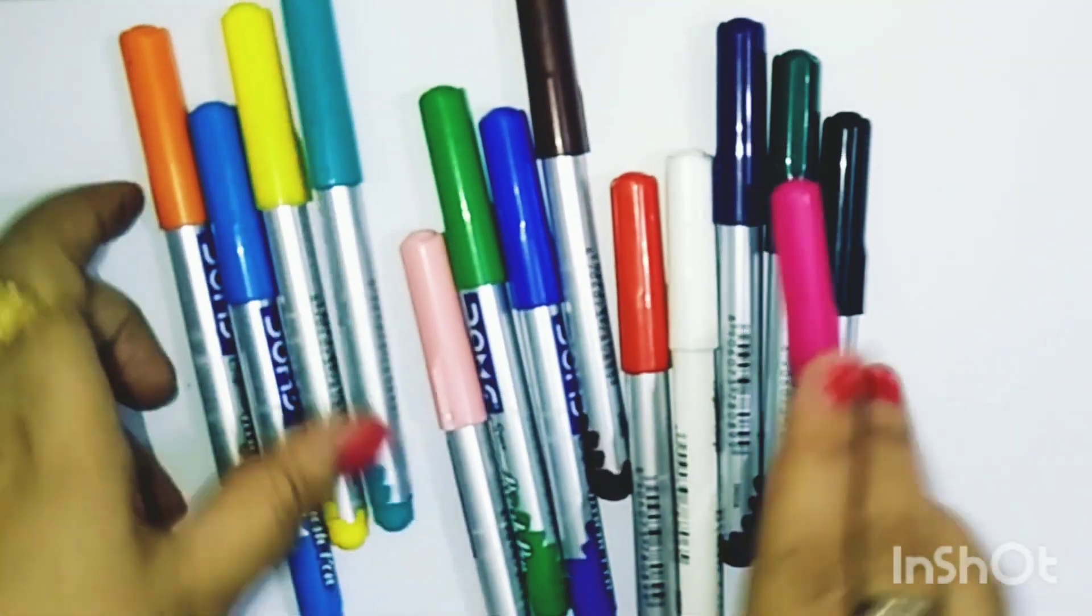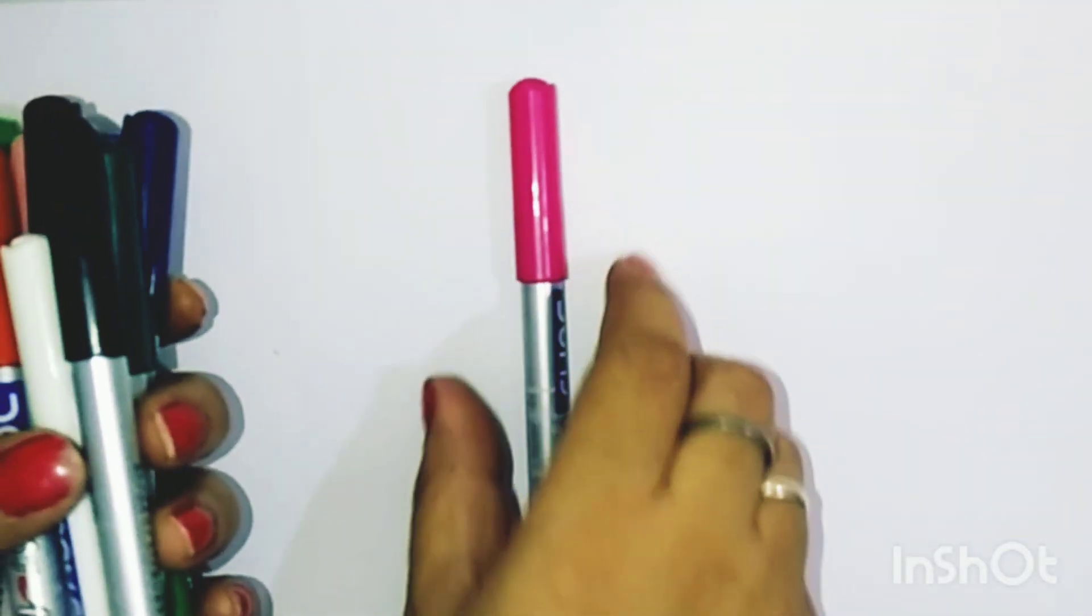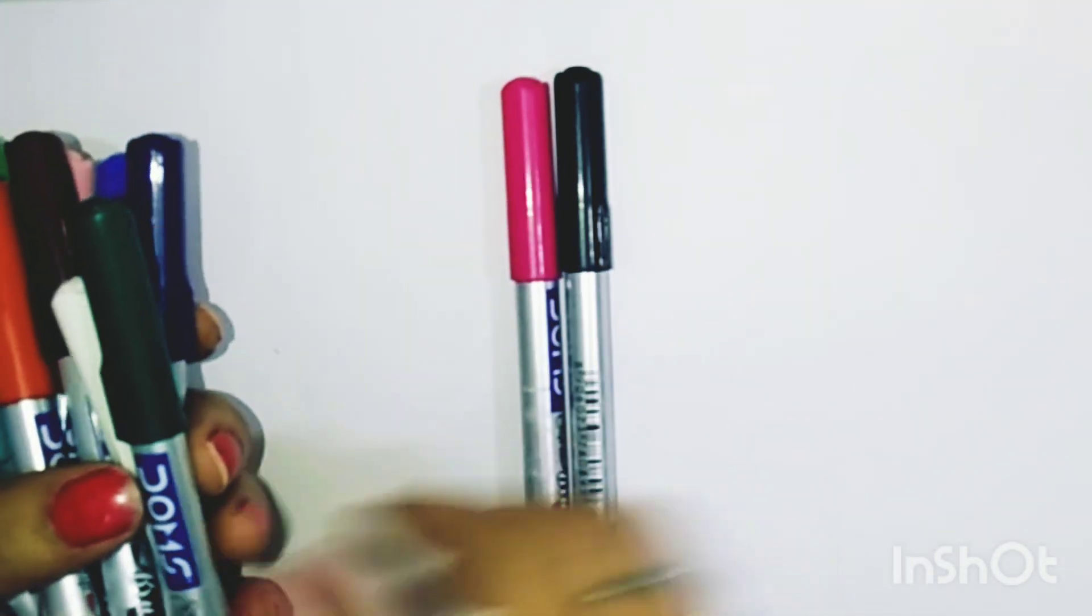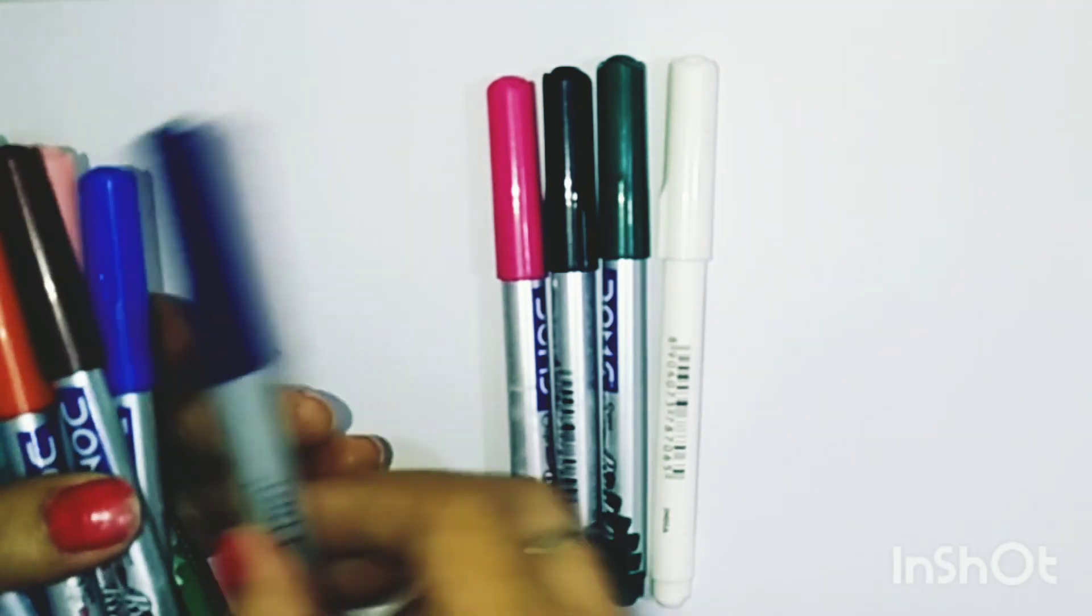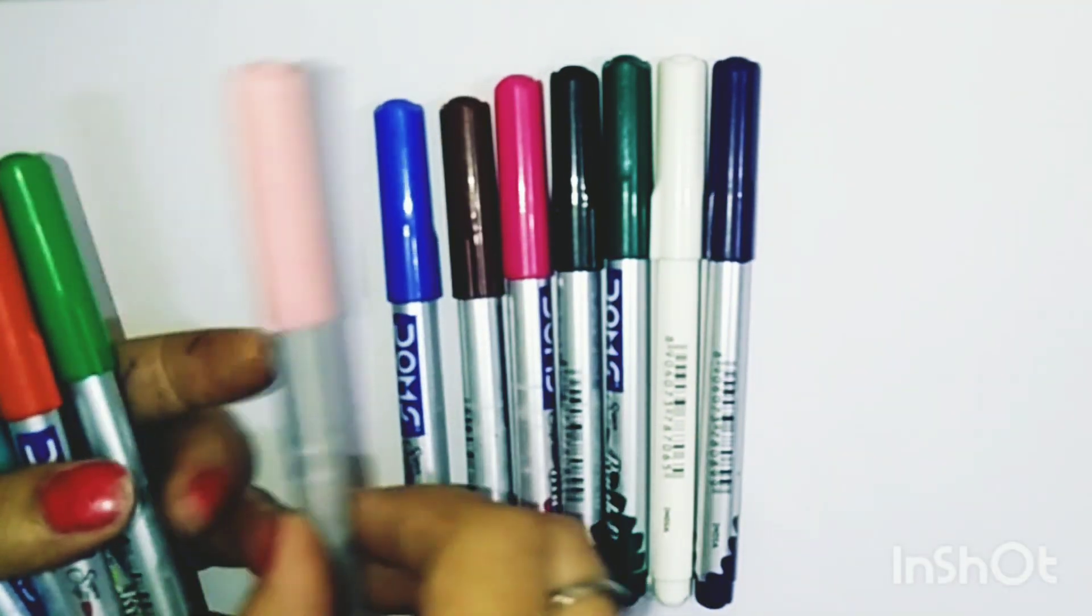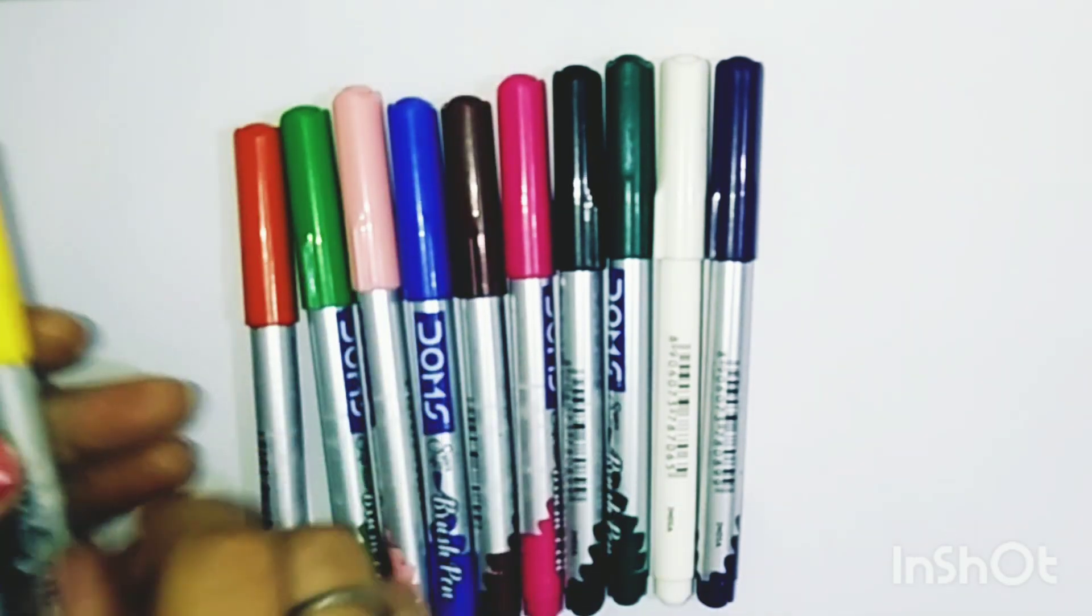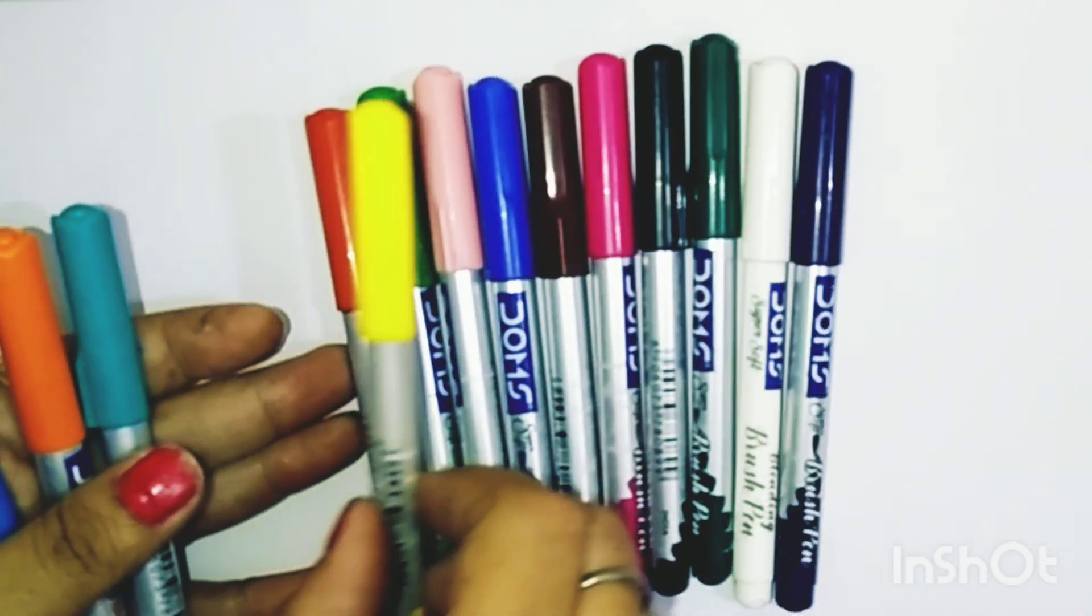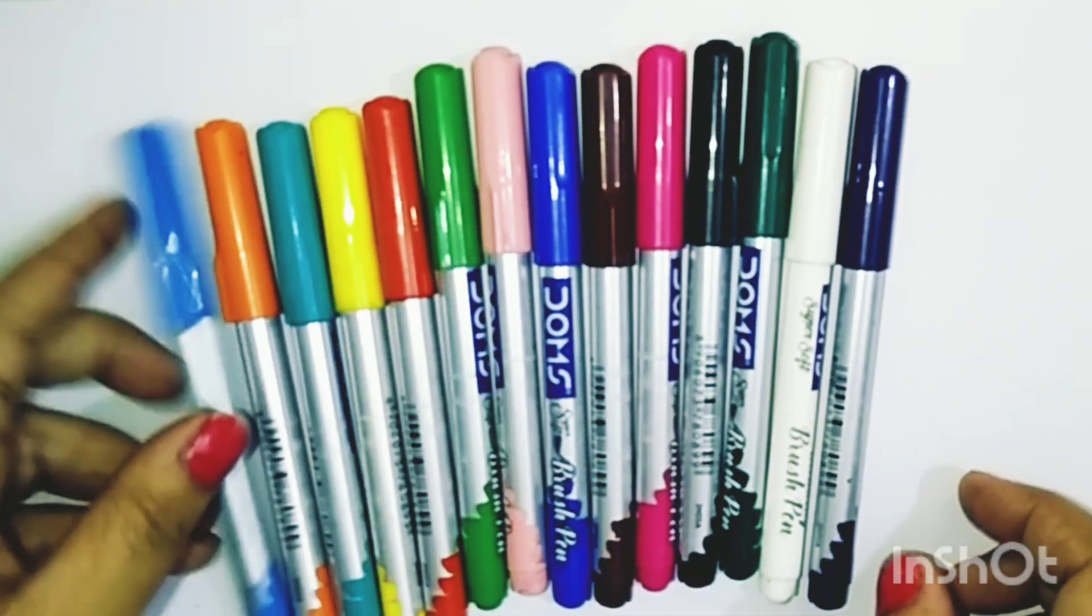Lots of beautiful colors, so many colors. Now let us restart: it's pink, black, deep green, white, indigo, brown, blue, baby pink, green, red. Now this is yellow, sea green, orange, and sky blue. Now let us start our work.